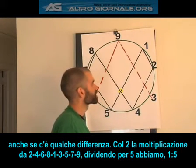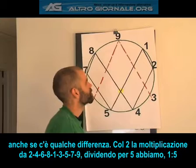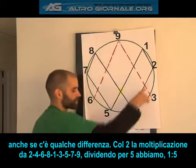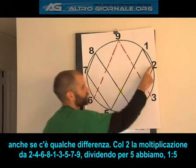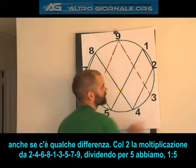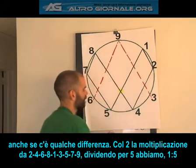So let's see — 2 multiplications go 2, 4, 6, 8, 1, 3, 5, 7, 9.